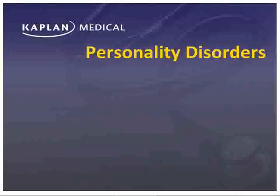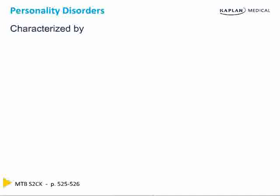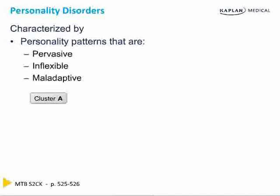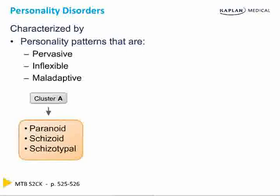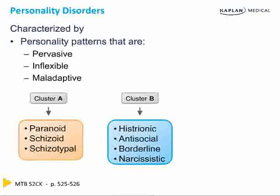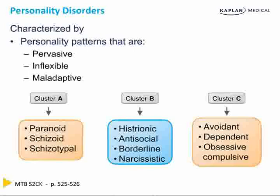Now the fun begins — the personality disorders. There are three clusters with patterns of behavior that are pervasive, inflexible, and maladaptive. Cluster A are the 'weirdos' in society: paranoid, schizoid, and schizotypal personality disorders. Cluster B are the 'bad ones': histrionic, antisocial, borderline, and narcissistic. Cluster C are the 'wimps': avoidant, dependent, and obsessive-compulsive personality disorder. We'll go through each cluster and note specific things to look for in the vignette.